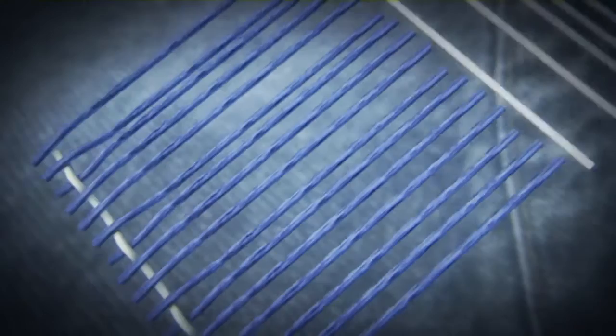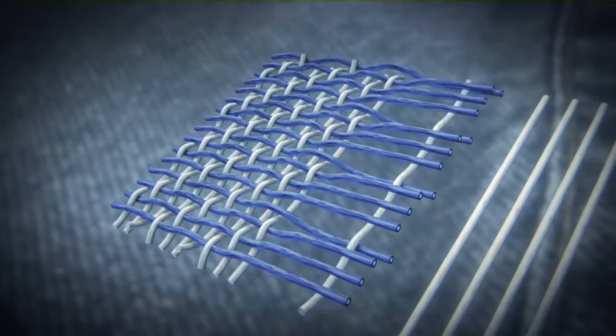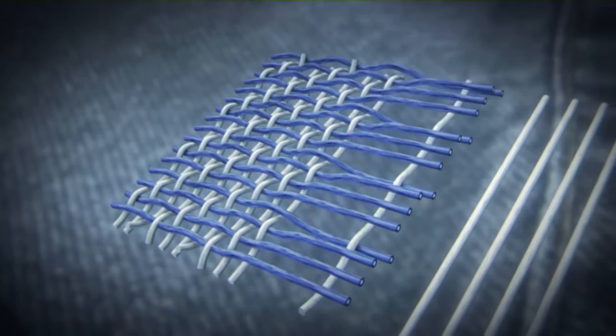This becomes apparent when we consider the type of weaving which gives denim fabric its characteristic look. The dyed warp threads run lengthwise and the raw weft threads run transversely across them from side to side. Most of the colored warp threads are visible on the outside, while the white weft threads face inwards.